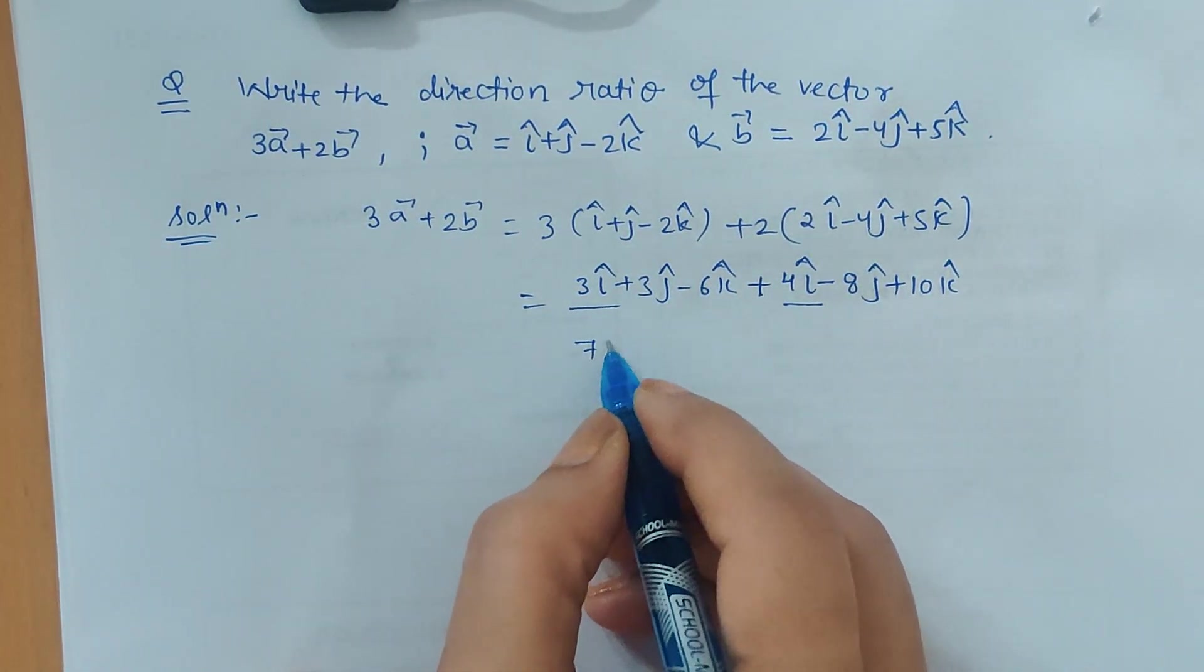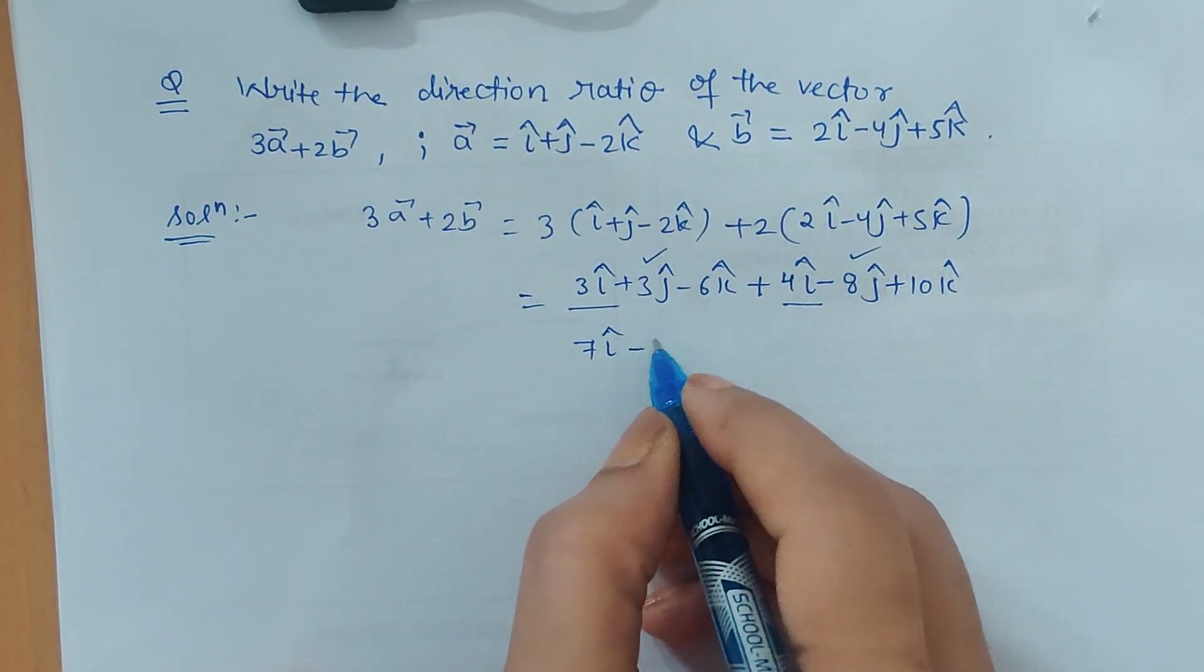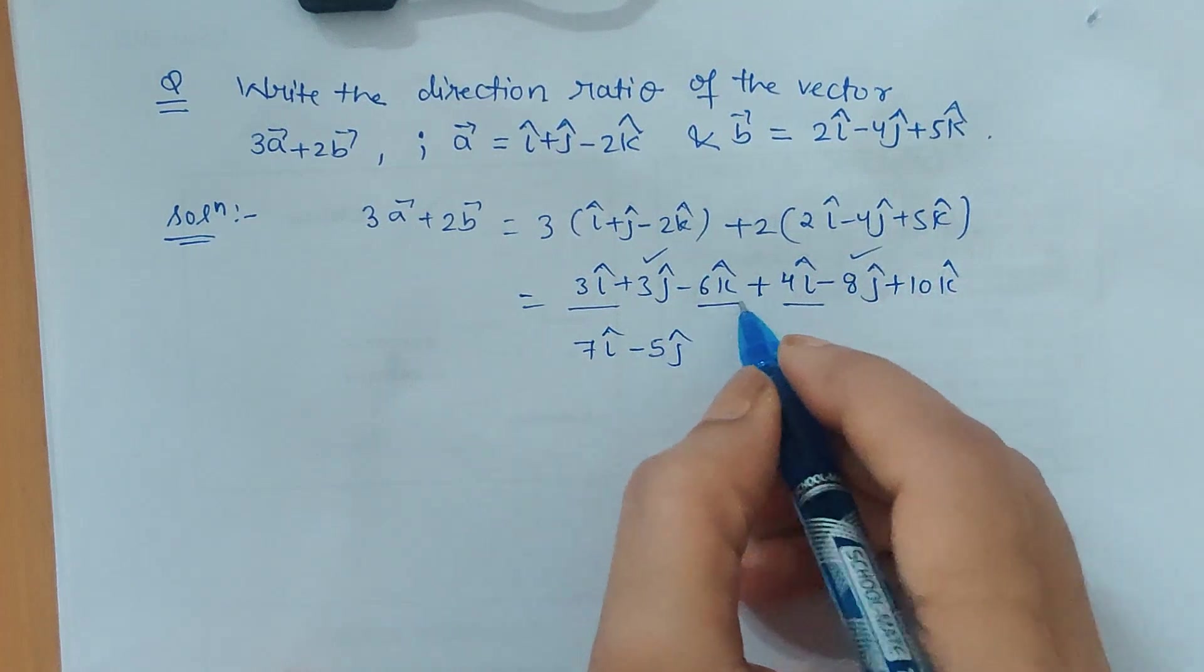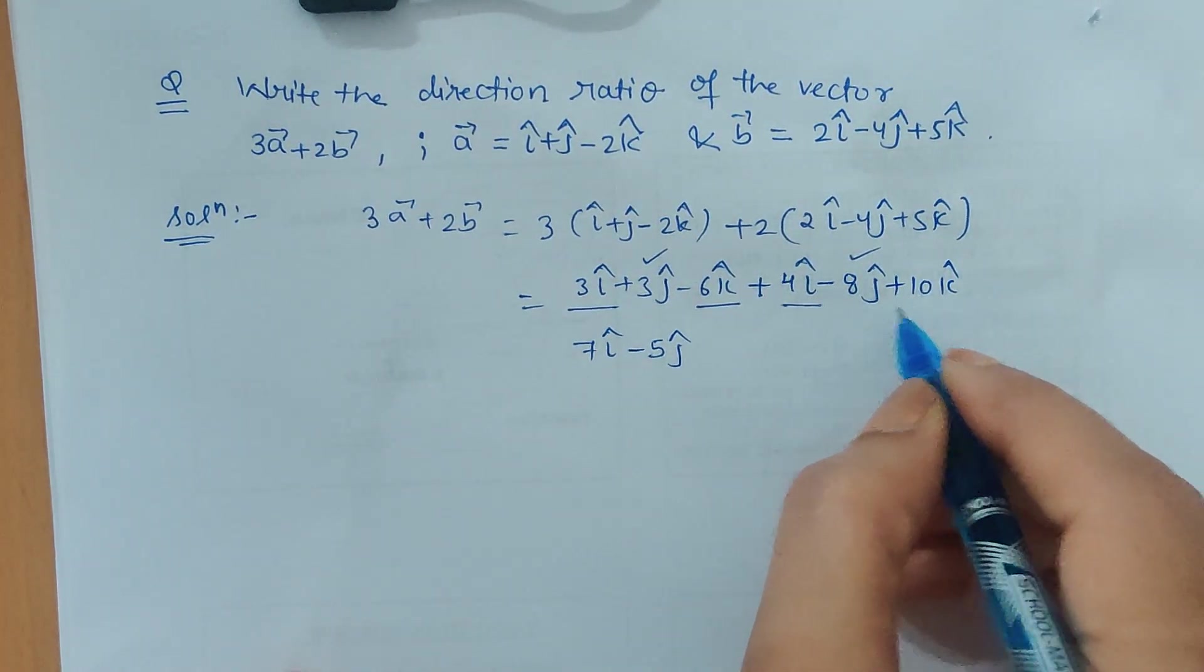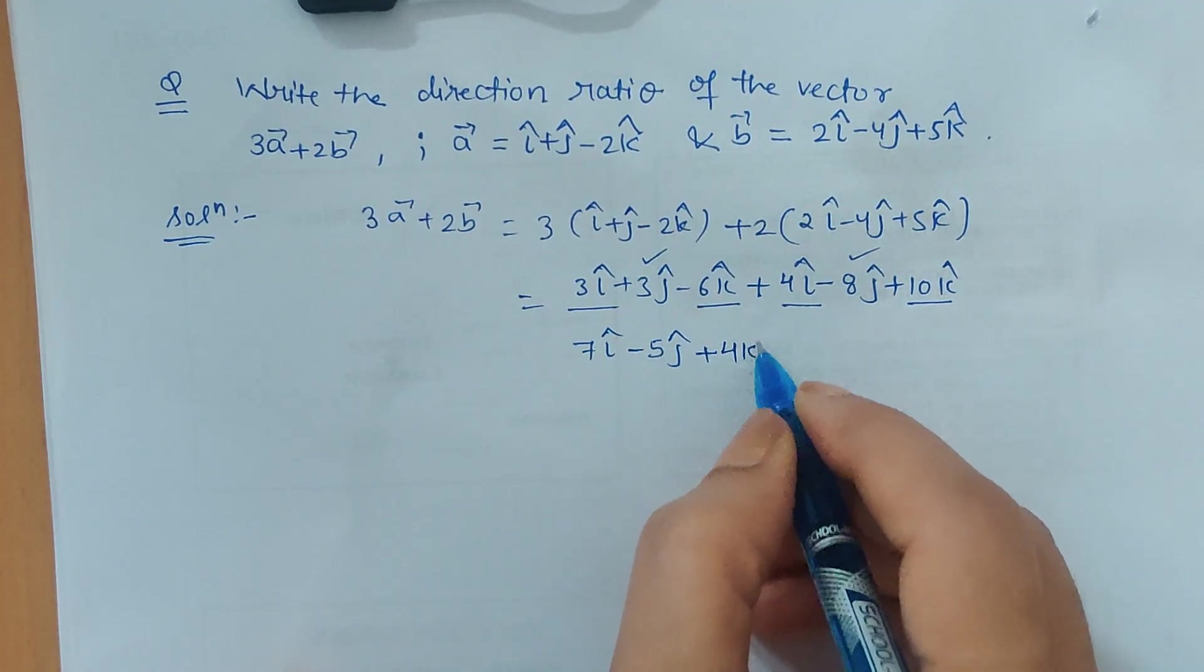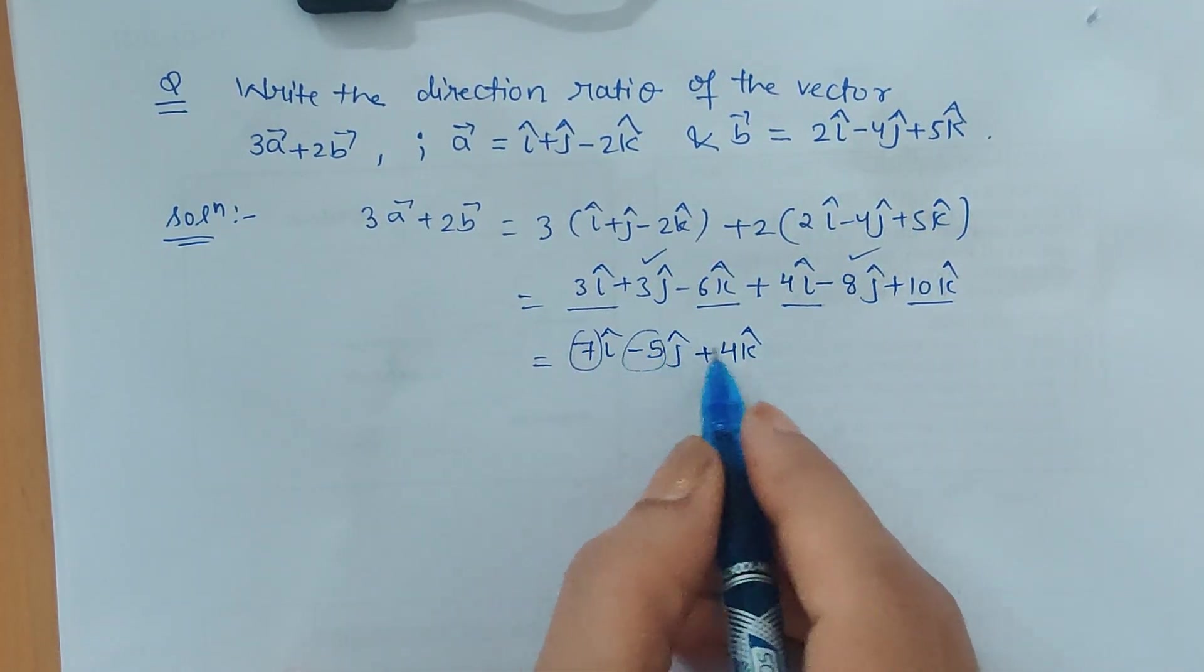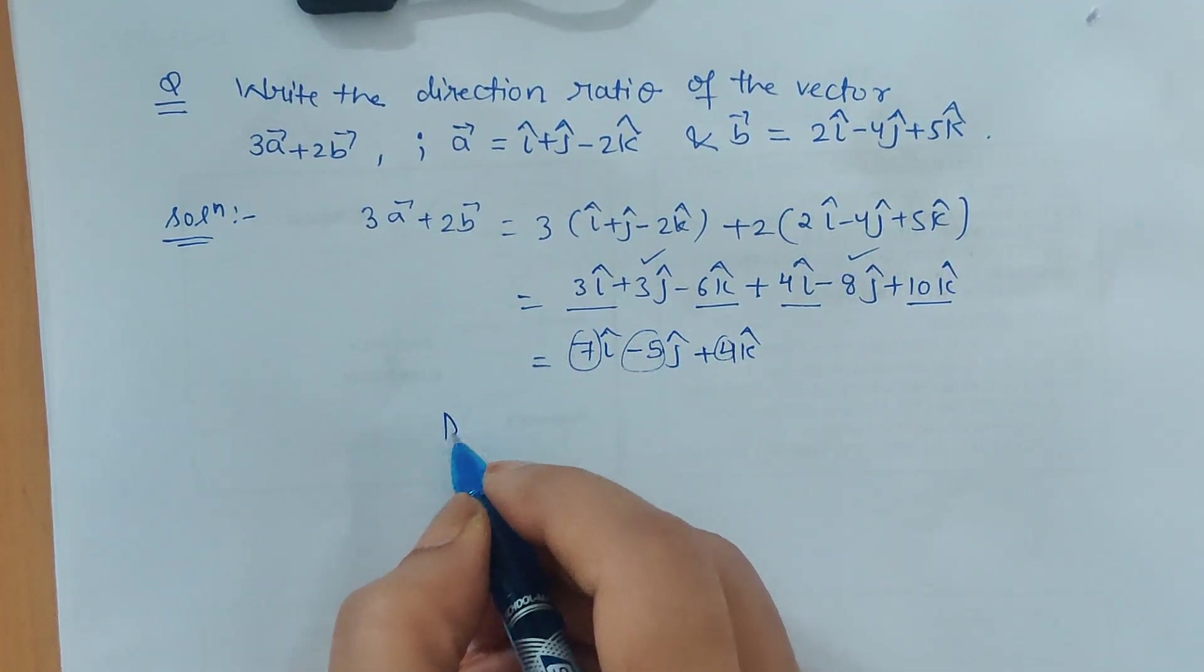So 3 plus 4 is 7i cap, then 3j minus 8j is minus 5j cap, and minus 6k plus 10k is plus 4k cap. The direction ratios are these scalar components.